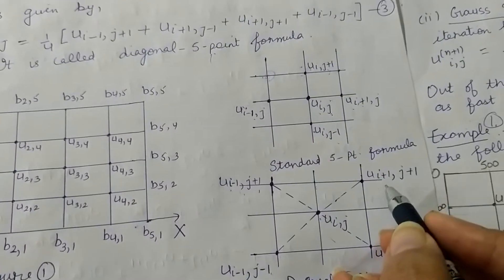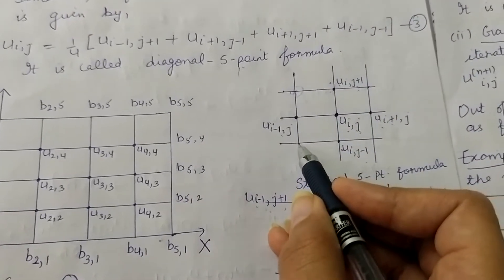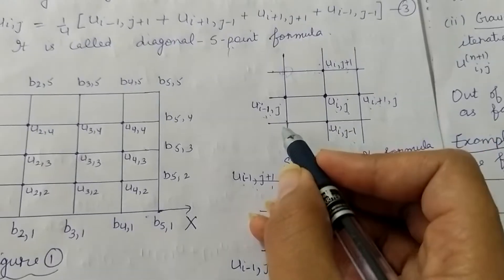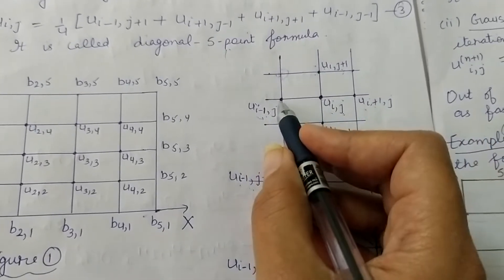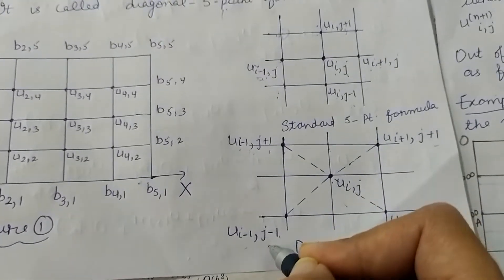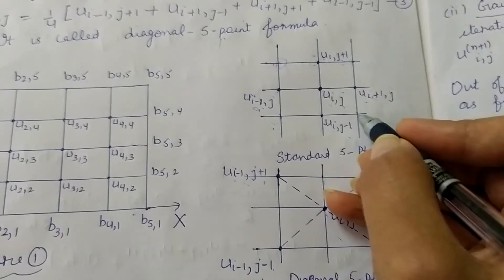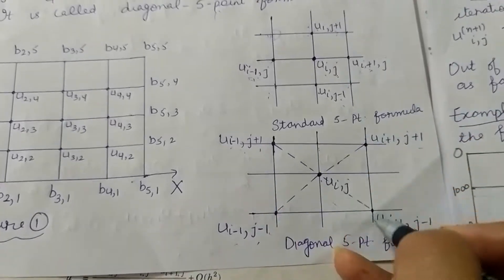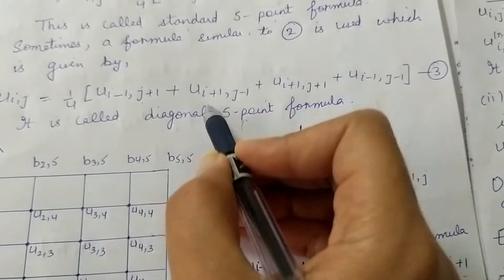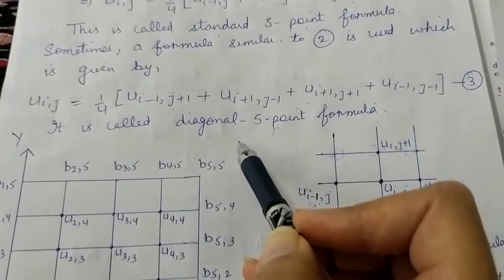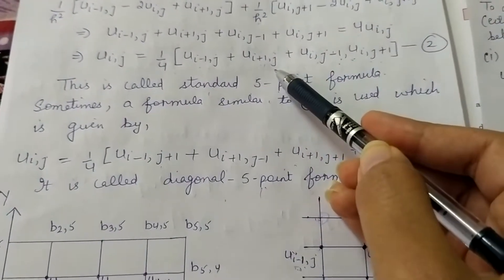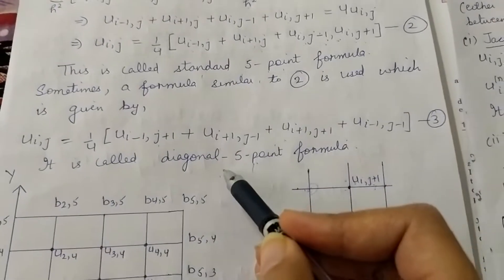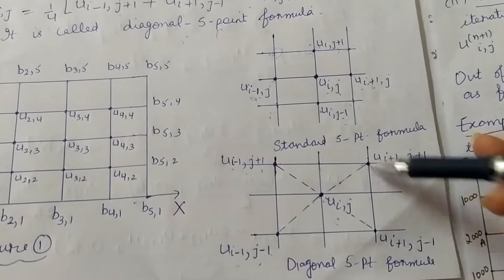Similarly, we can derive the diagonal five-point formula. Here, instead of the left, right, up, and down neighbors, we use the four diagonal points around u(i,j): u(i-1,j+1), u(i+1,j+1), u(i-1,j-1), and u(i+1,j-1). Using these four diagonal points we can again find the value for u(i,j), and this is called the diagonal five-point formula.